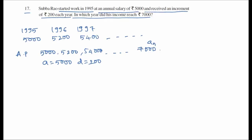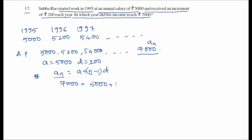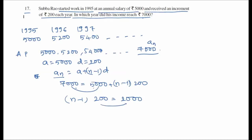Setting a_n equals 7000: 7000 equals 5000 plus (n minus 1) times 200. So (n minus 1) times 200 equals 2000, giving n minus 1 equals 10, therefore n equals 11.